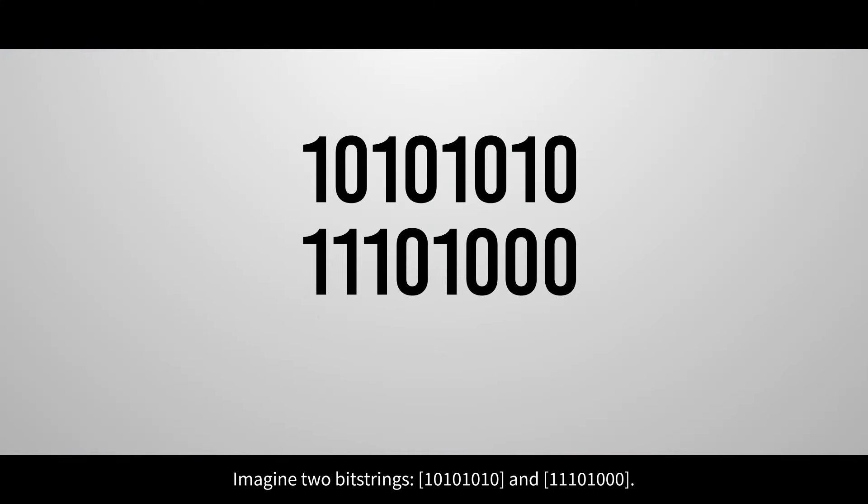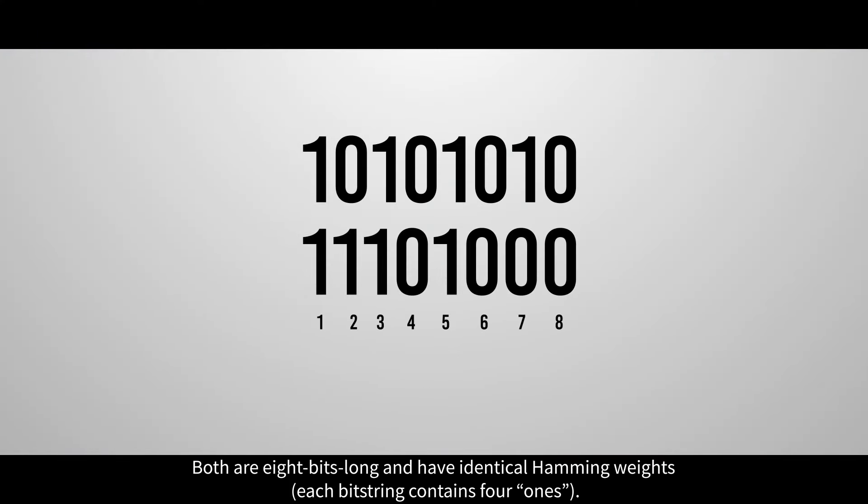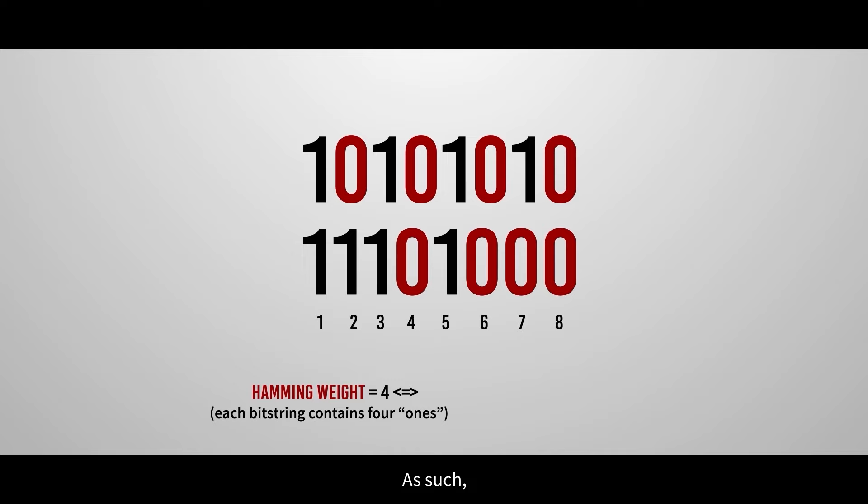Imagine two bitstrings. Both are eight bits long and have identical Hamming weights. As such, both bitstrings have the same Shannon entropy.